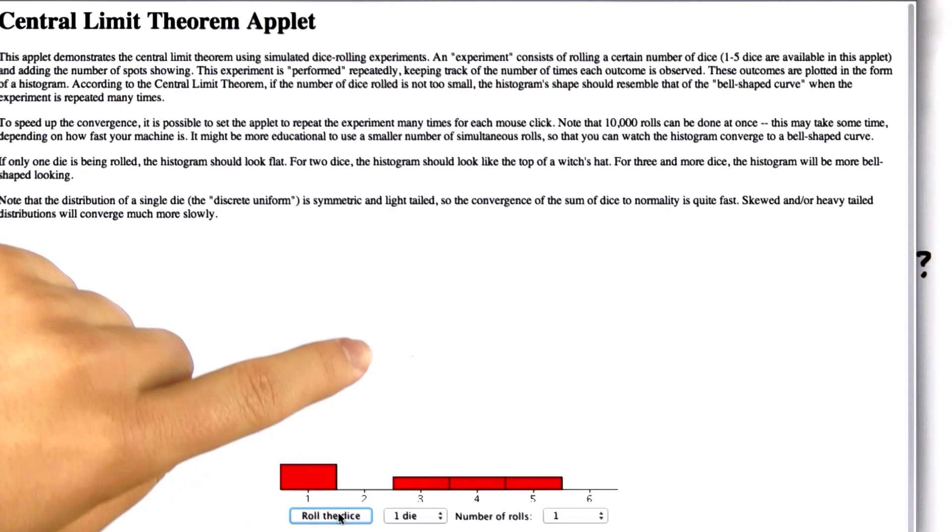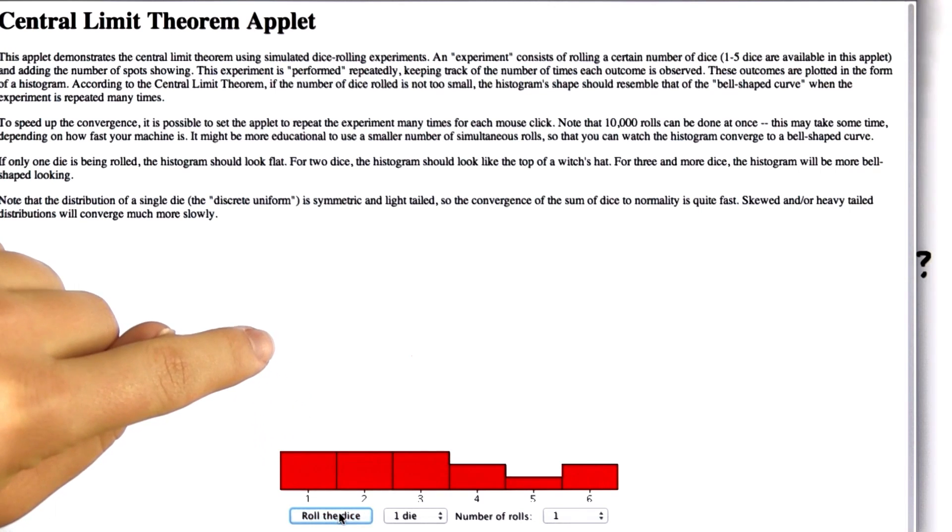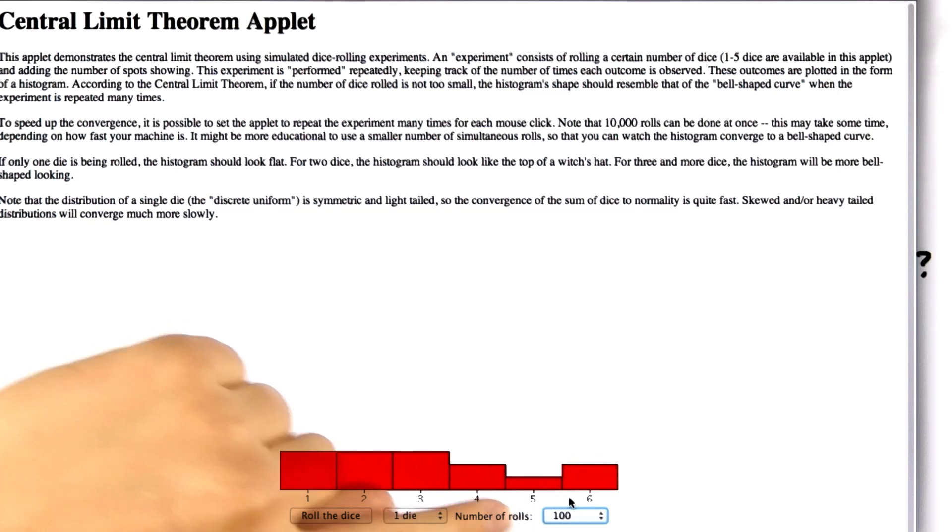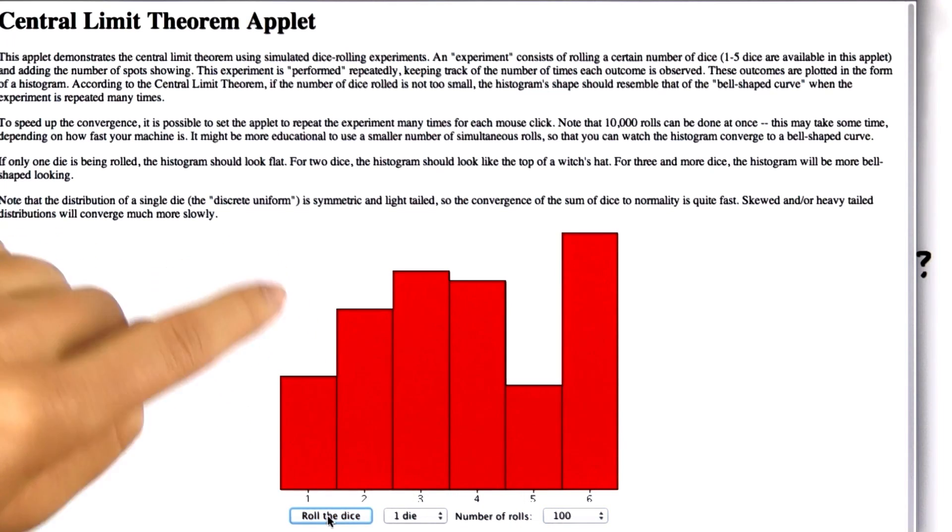We can keep rolling it and we see what we get. But we don't want to do this 100 times. So let's just change this and select 100. Now we'll roll one die 100 times.